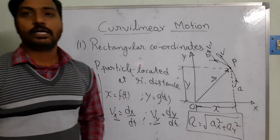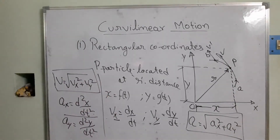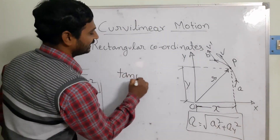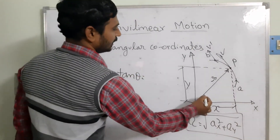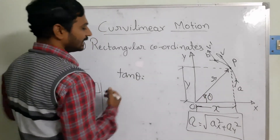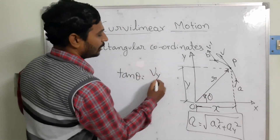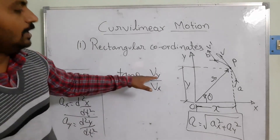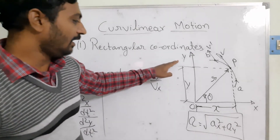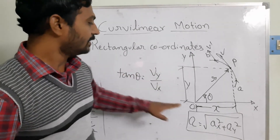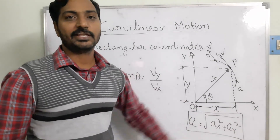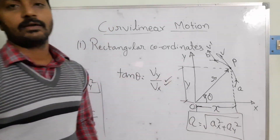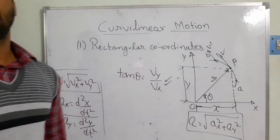Now we will see the slope of the path. The slope is calculated as: tan θ = vertical component of velocity / horizontal component of velocity = vy / vx. So the angle θ that the velocity makes with the horizontal gives the slope of the particle's path.